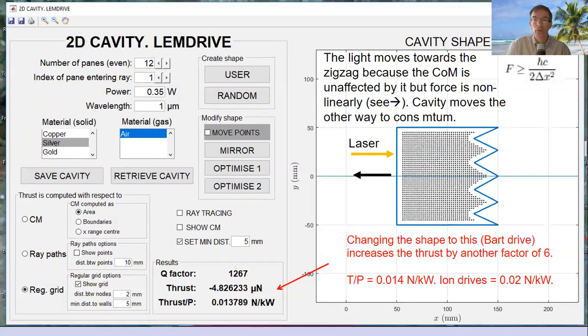We've tried playing with a few different shapes, and this turns out to be a very good one. We call this the Bart drive, because it looks a bit like Bart Simpson's head. We have a zigzag shape on this side and a flat shape on the other side. We fire the laser and it bounces around. This shape produces an improvement of about a factor of six in thrust. Now we're about 0.01 newtons per kilowatt, which is getting close to ion drives. The great thing is you don't require fuel.